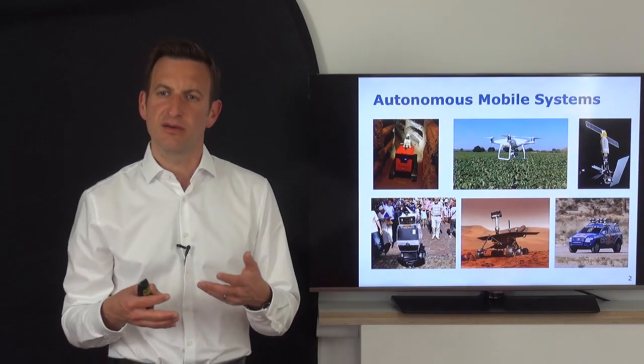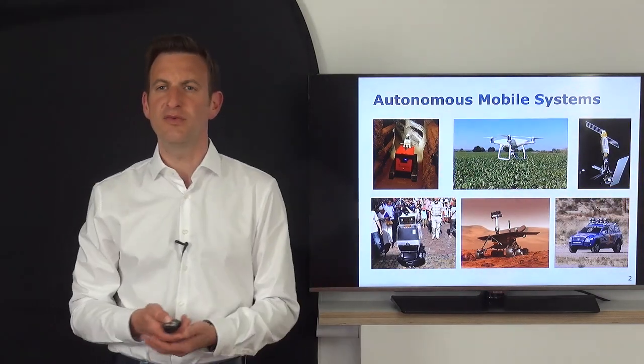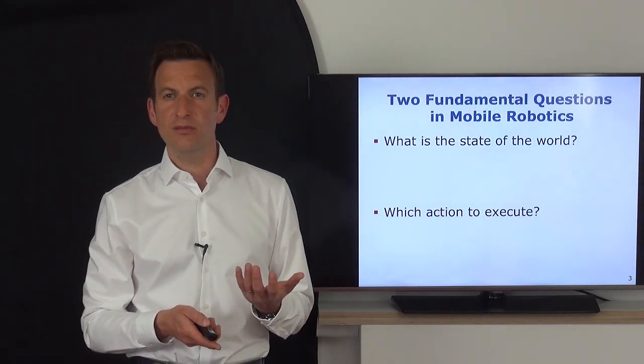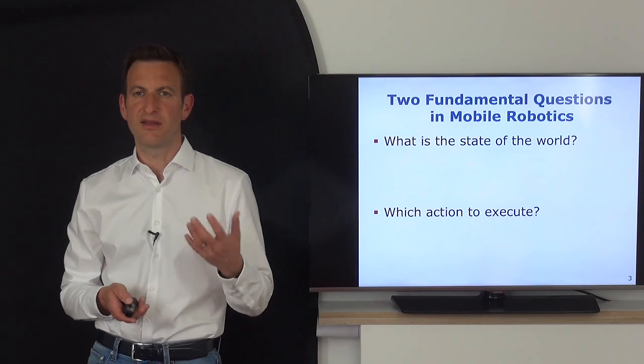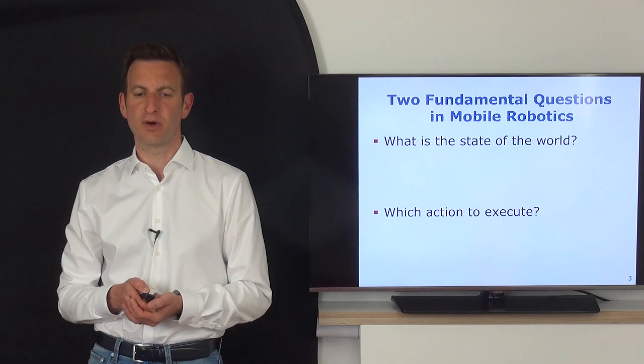Most of the questions circulate around two questions. What are the two fundamental questions? These questions are: what is the current state of the world? So what does the world look like? And the second thing is, what should we actually do? Which action to execute? These are two central problems of robotics.